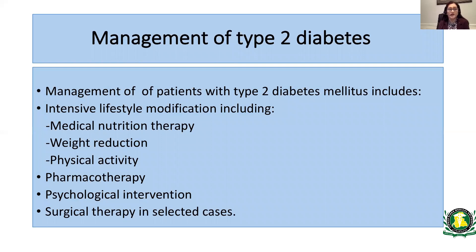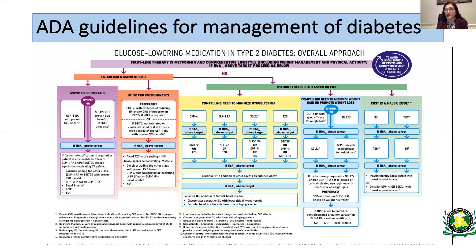Diabetes is a chronic illness and many factors are involved in its management beyond medications. Management includes intensive lifestyle modification involving medical nutrition therapy, weight reduction, and physical activity, then pharmacotherapy, psychosocial intervention, and surgical therapy in selected cases. There are two sets of guidelines used in the United States: one by the American Diabetes Association and another by the American Association of Clinical Endocrinologists. I will discuss where each medication fits into the guidelines when we cover individual medications.